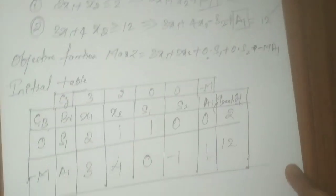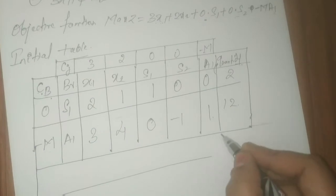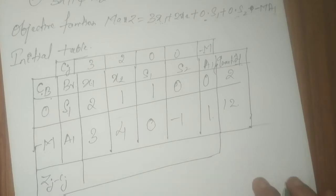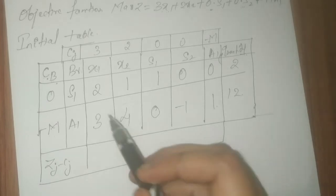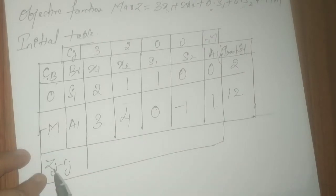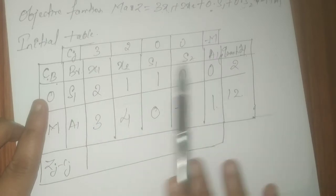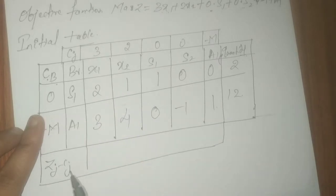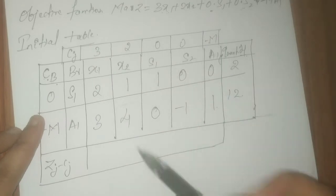Next we compute Zj minus Cj. Zj is the summation of cb multiplied by each column entry, and that result is subtracted from cj, the top row. For the x1 column: 0 times 2 is 0, plus minus M times 3 gives minus 3M. Subtracting cj which is 3: the result is minus 3M minus 3.